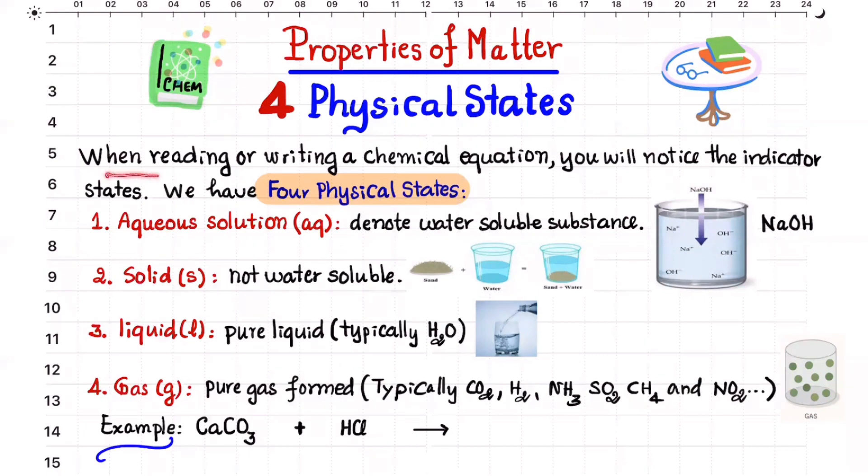Okay, when reading or writing a chemical equation, you will note the indicator states. We have four physical states. Four physical states are very important for you. You should remember one by one.